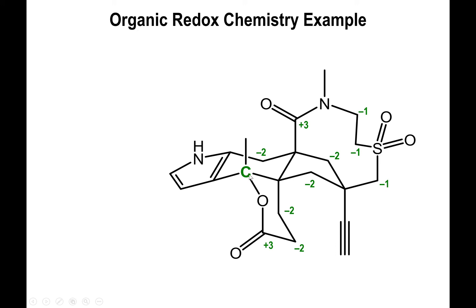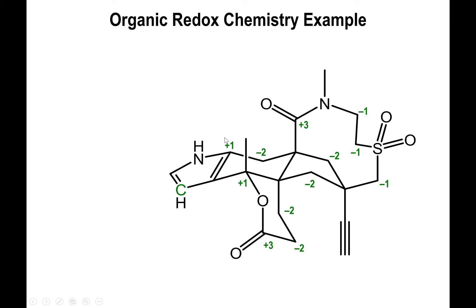Now consider this carbon, which already has four bonds — so there are no hydrogens on it. Three of those bonds are to other carbons, which we ignore, but one bond is to oxygen, increasing the charge by +1. So this is a +1 carbon. We have one more instance of that: another quaternary carbon with four bonds, three to carbons and one to nitrogen, also giving a +1 charge.